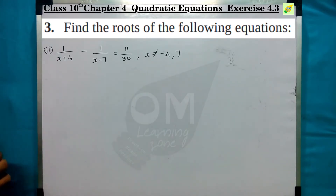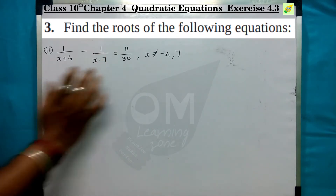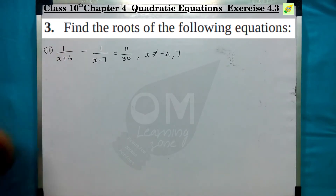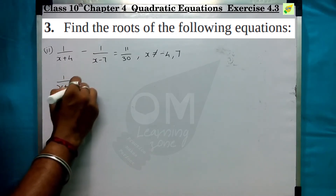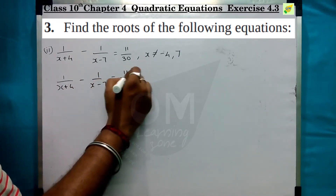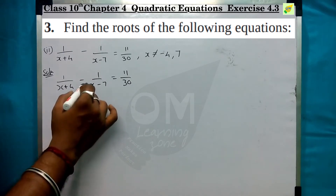This equation is not equal to minus 4 and 7. This is the hint solution for the second subdivision — it is not equal to minus 4 and 7. Now here is the cross multiply step.